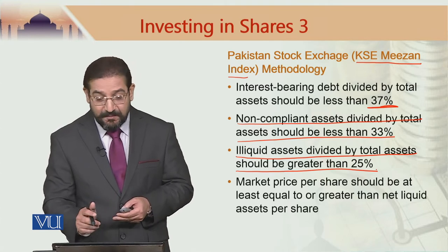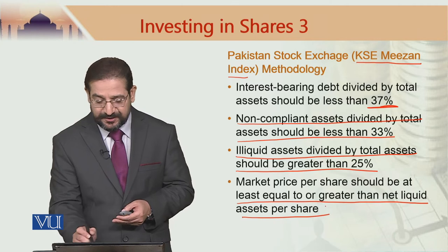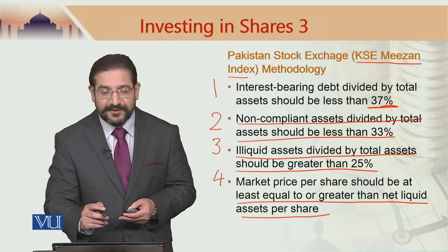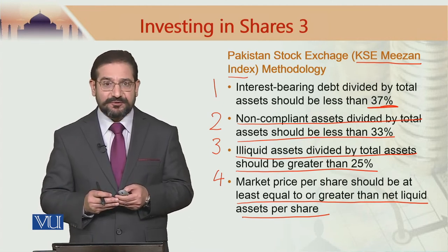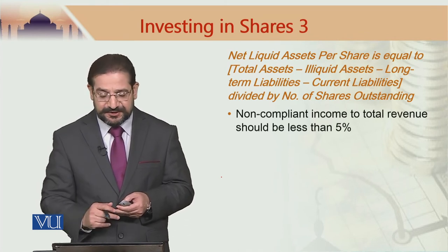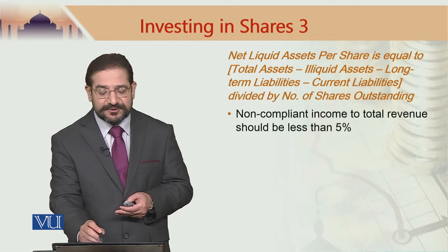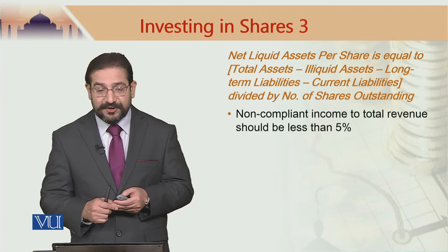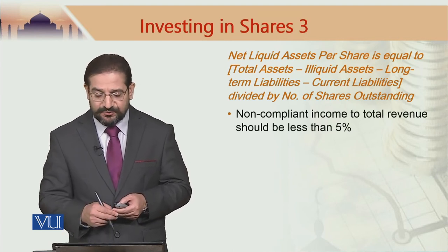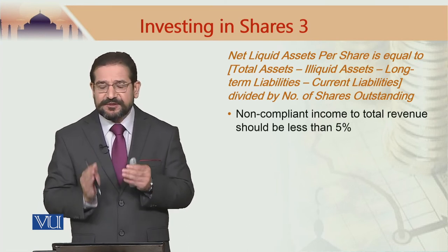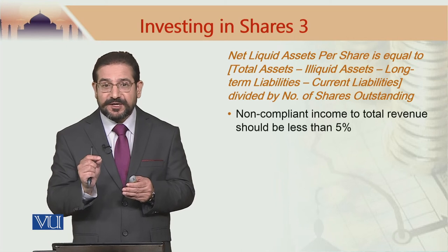The market price per share should be at least equal to or greater than net liquid assets per share. These are three or four main aspects of the KMI methodology. Net liquid assets per share is defined as total assets minus illiquid assets minus long-term liabilities minus current liabilities, divided by number of shares outstanding. So this is a very detailed methodology. The last criterion is non-compliant income to total revenue should be less than 5%. This methodology is used by a number of players in the market picking Sharia-compliant stock from PSX.